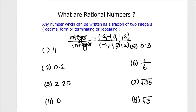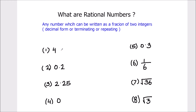Let's jump into our examples and find out whether these numbers are rational or not. The first number is 4. Number 4 can be written as a fraction: 4 over 1, or 8 over 2, or even 16 over 4. So all these are rational numbers — they are in the form p over q where the denominator q is not equal to 0.